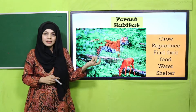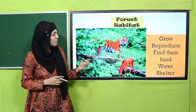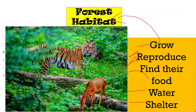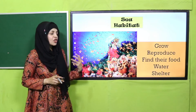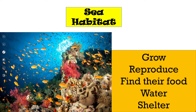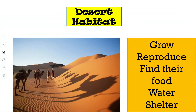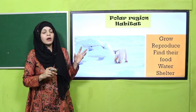Let me show you some habitats. In a forest habitat, tigers and deer both live — it is their home. One eats plants and the tiger eats other animals, but both grow, reproduce, find their food, water, and shelter — that is how this becomes their habitat. In a sea habitat, fish live, grow, reproduce, find their food and shelter. In a desert habitat, camels live and find their food, water, and shelter — that is their home.